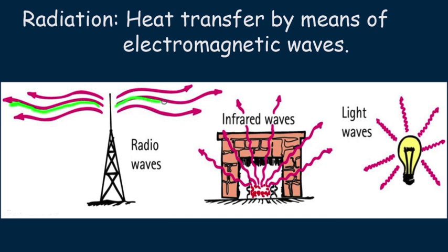Here we see a radio antenna, a fireplace, and an incandescent bulb. All are radiating electromagnetic waves of energy, which we call radiant energy. The source of most radiant energy is vibrating electrons. We'll discuss this much more in future lessons.